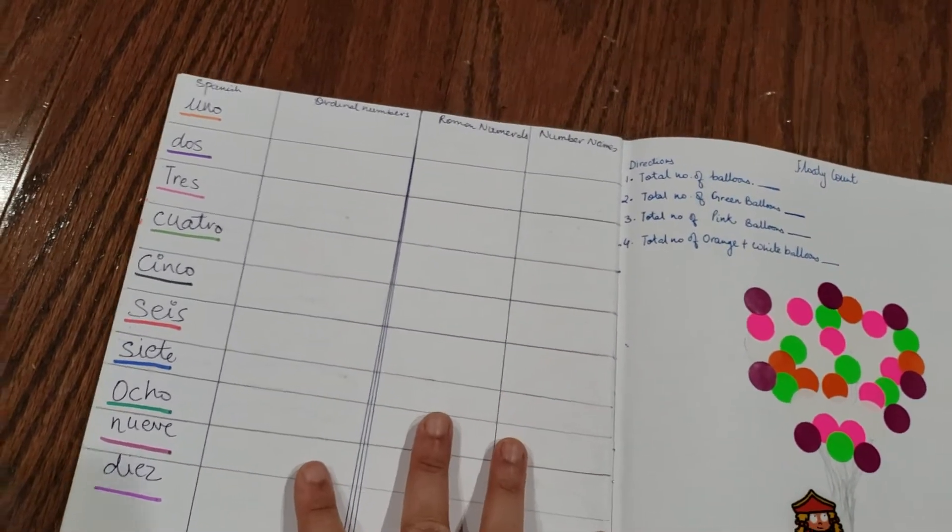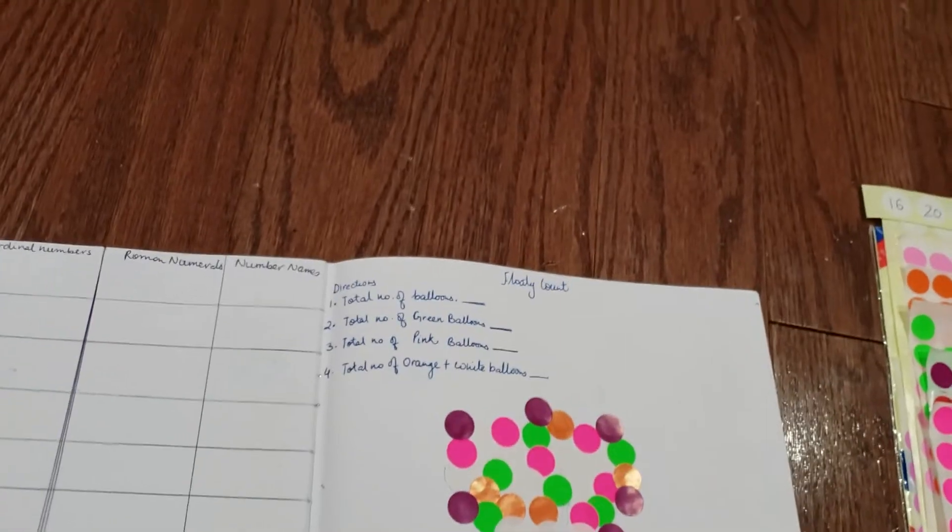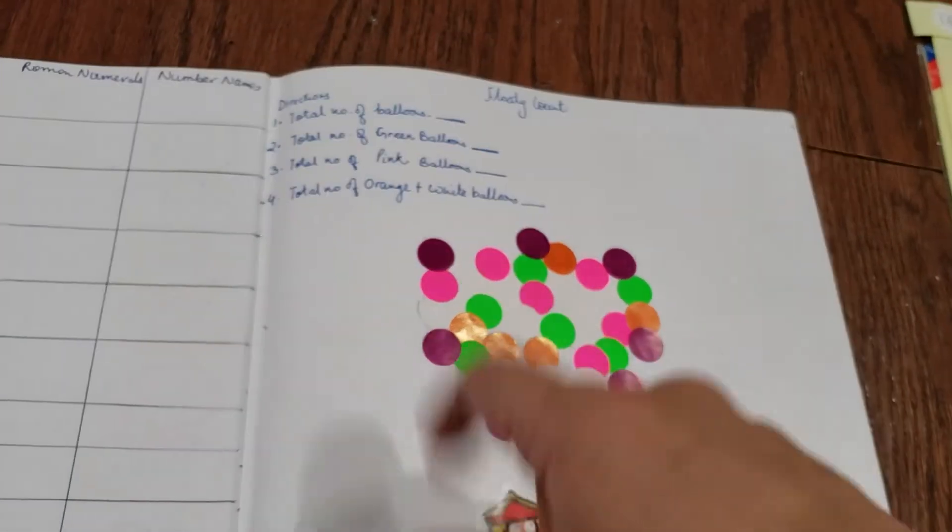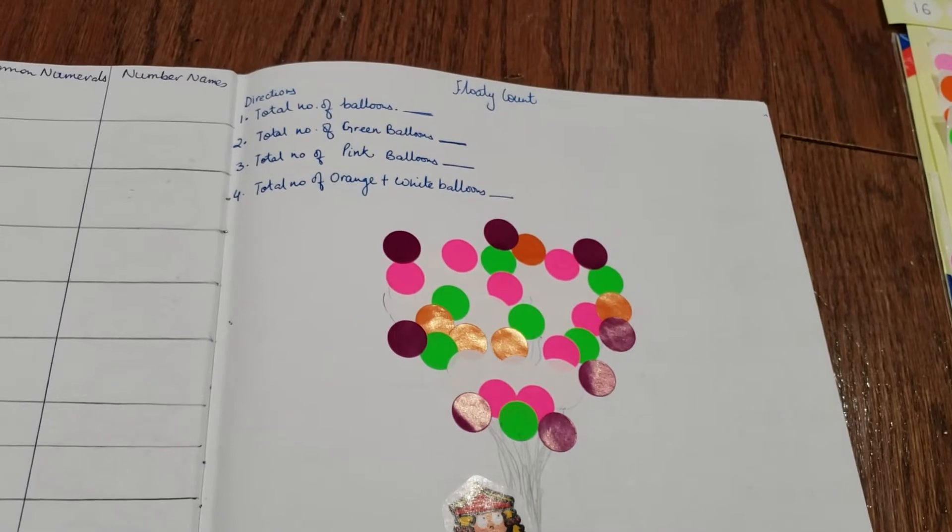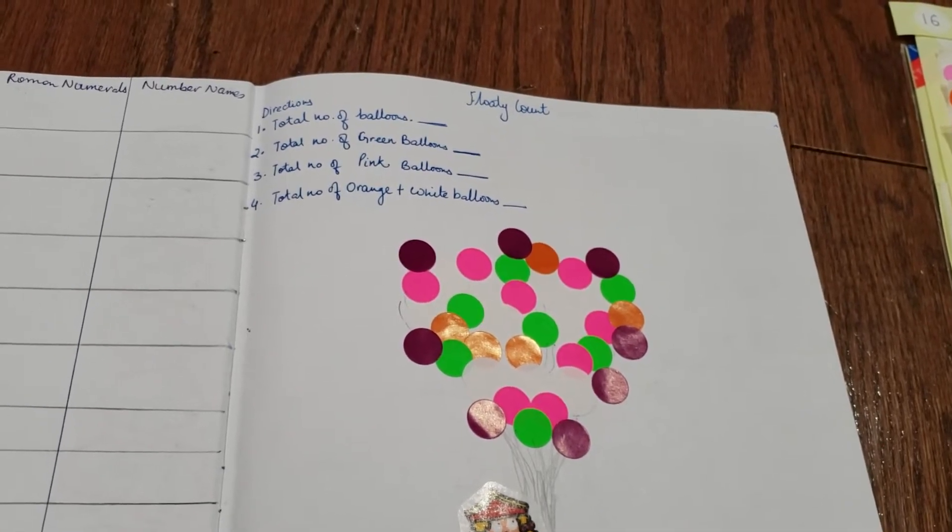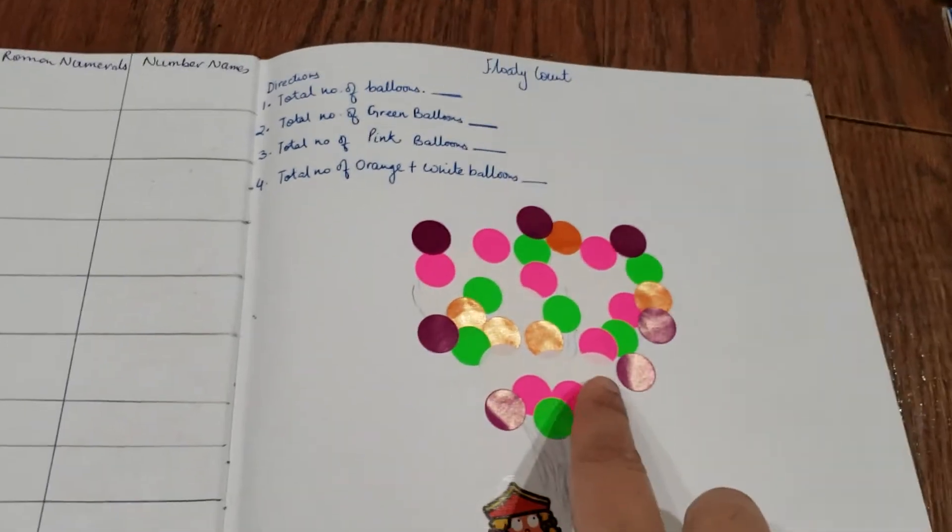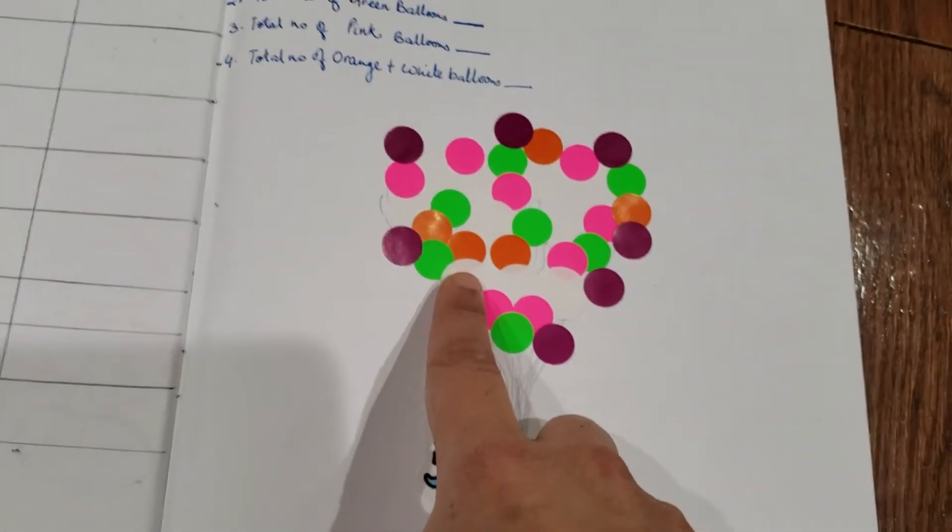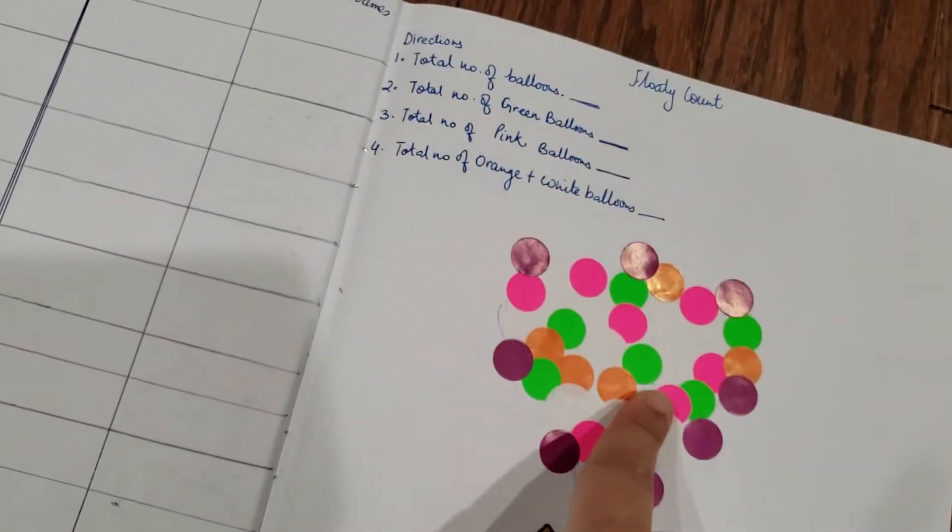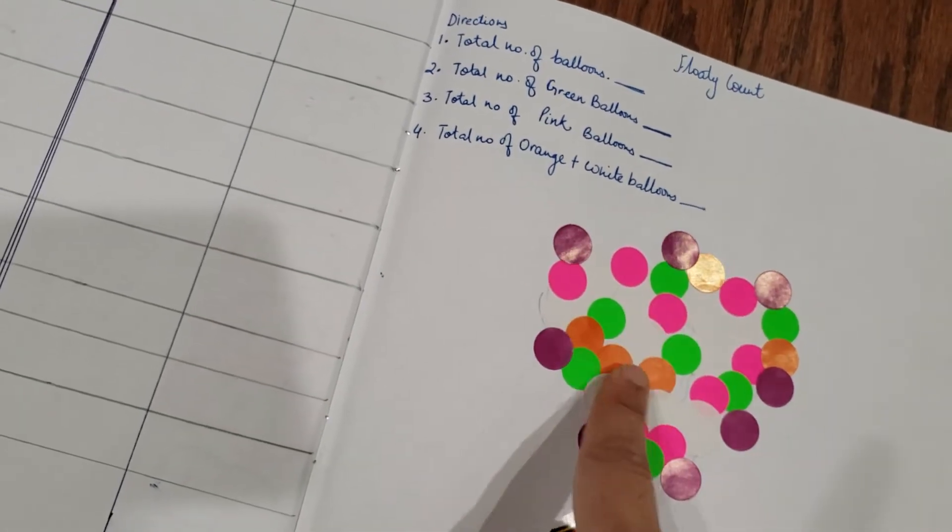Then we have flower recount, which is like a balloon game. Here again you have directions: write total number of balloons, total number of green balloons, pink balloons, and then total number of orange plus white balloons. These stickers - the white ones - you can very evidently see them.